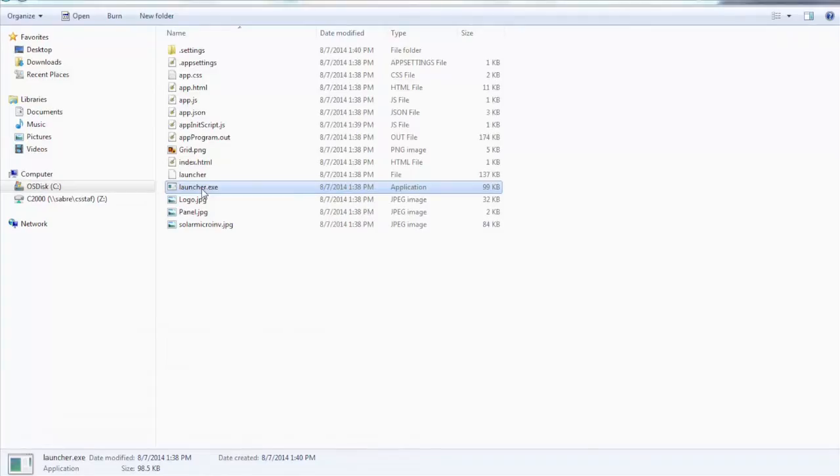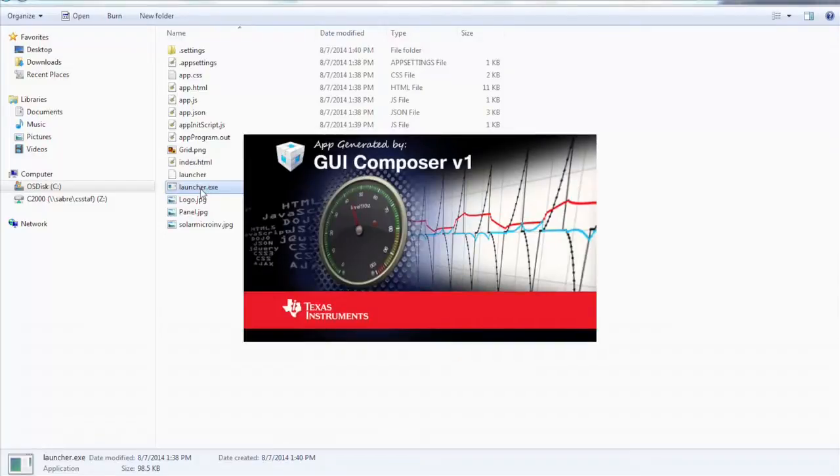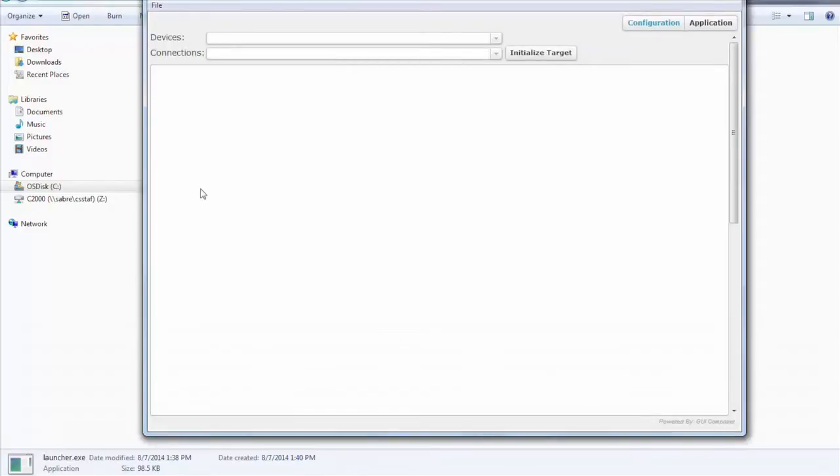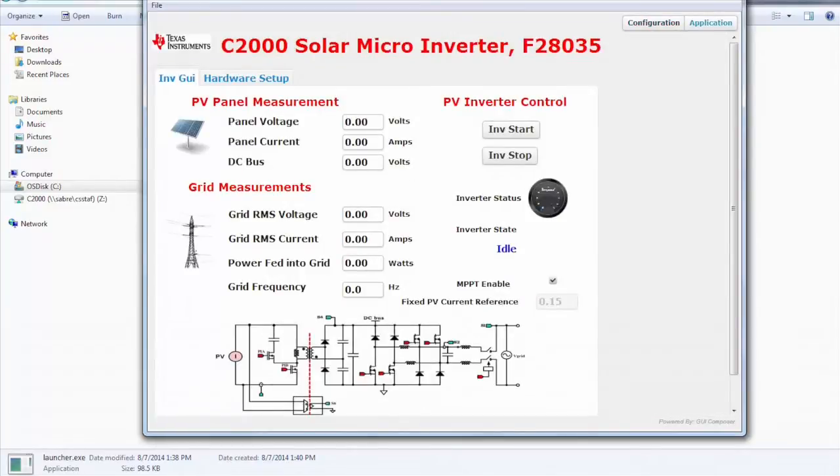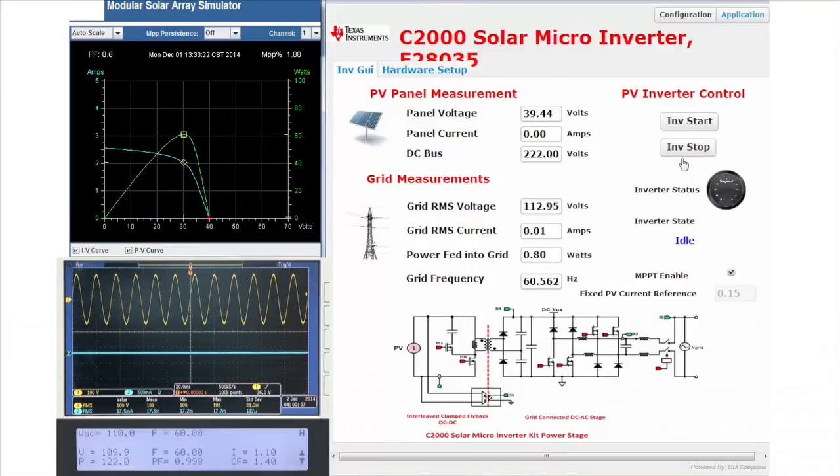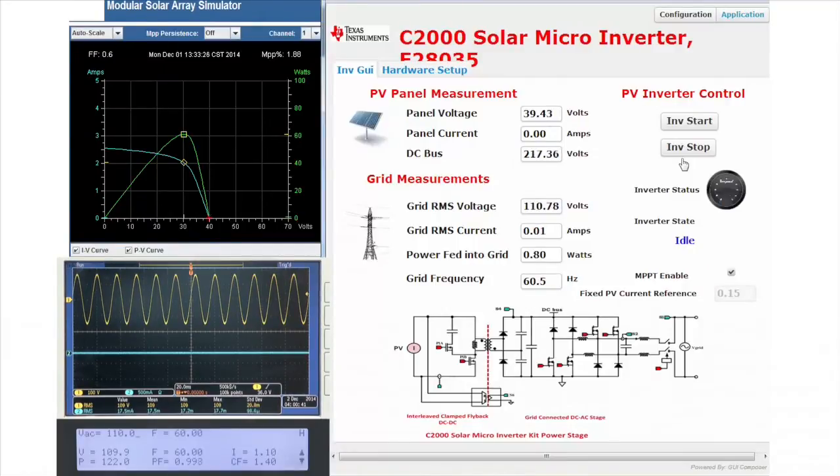For this demo, we will launch the GUI Composer application associated with the kit which is available in control suite. The GUI will load the code onto the board, enable real-time mode and run the code. Once finished, the GUI shows the voltage and current at the input and output of the solar microinverter.